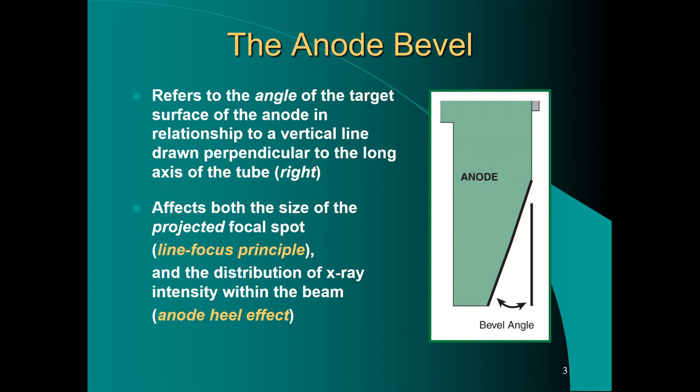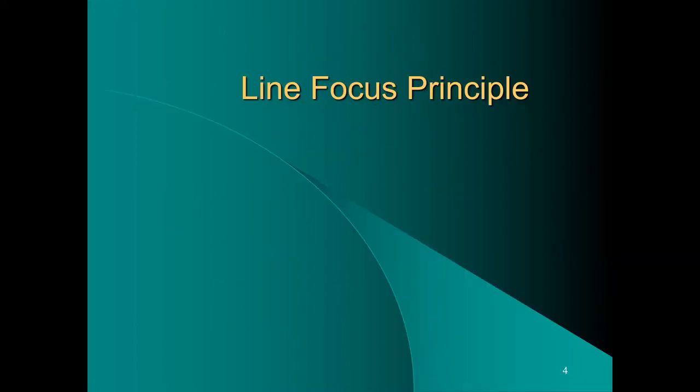It affects the size of the projected focal spot, we call that the line focus principle, and the distribution of the x-ray intensity within the beam. We think about that as the anode heel effect. The anode heel itself is basically the back and bottom side of the anode.